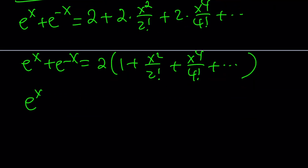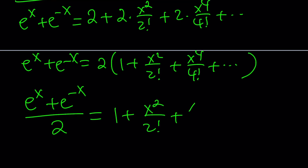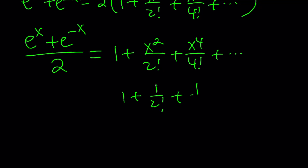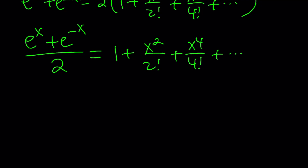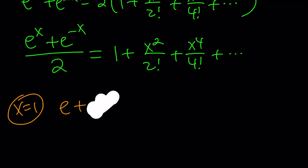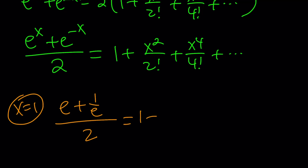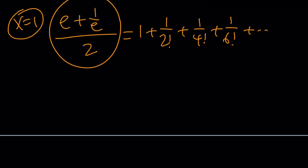Now we divide both sides by 2, and notice our target sum is exactly 1 plus 1 over 2 factorial plus 1 over 4 factorial plus 1 over 6 factorial, and so on. So all we have to do is replace x with 1. Replacing x with 1 on both sides gives us e plus e to the negative 1 (which we can write as 1 over e) divided by 2, equals our sum. Simplifying, the answer is e squared plus 1 divided by 2e.